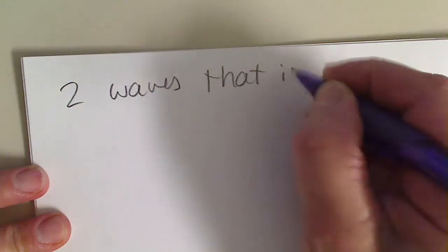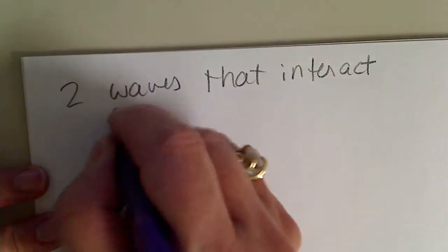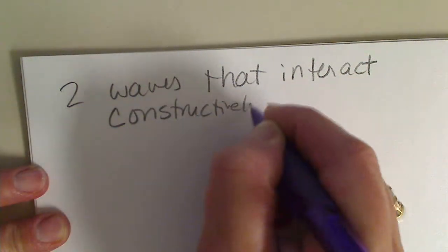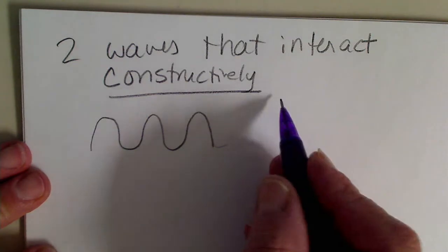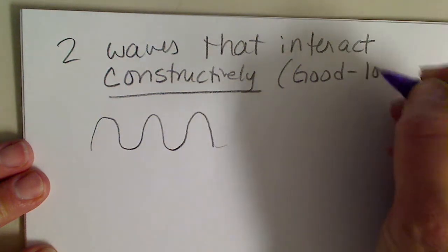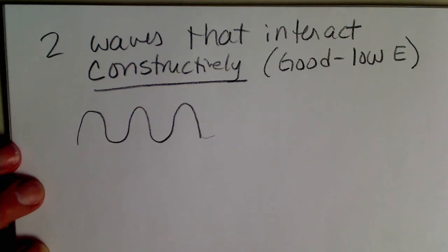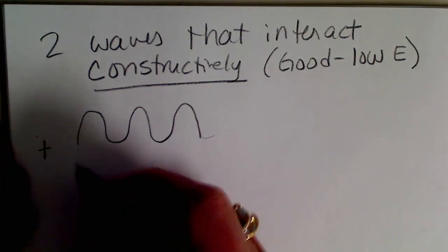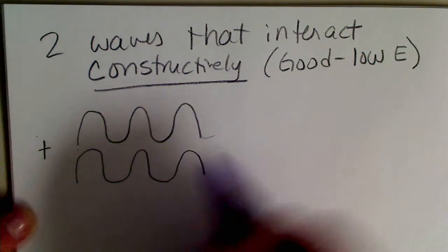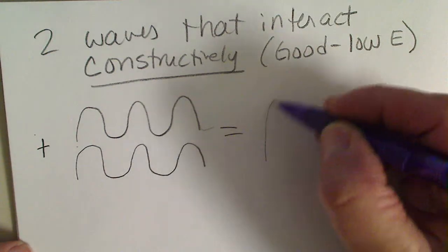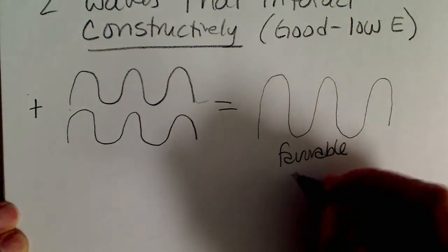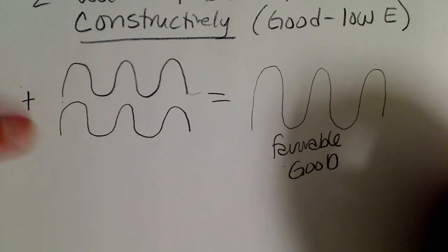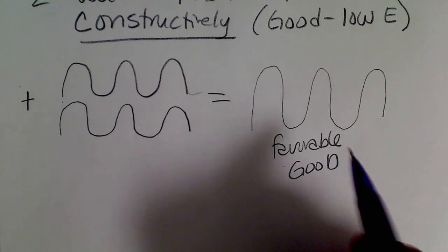We could have two waves that interact or combine constructively. And that's a good thing. This is constructive interference. This is a wave. This is good, which means low energy. Nature likes to have low energy. So this wave plus another wave exactly in phase, this would add up, the amplitude would increase. So this is favorable or constructive, good. And this type of interaction between two electrons on two different atoms that are forming a bond gives us a lower energy scenario.